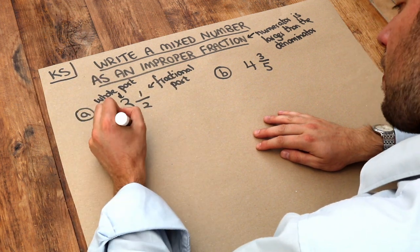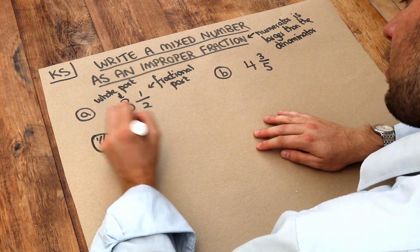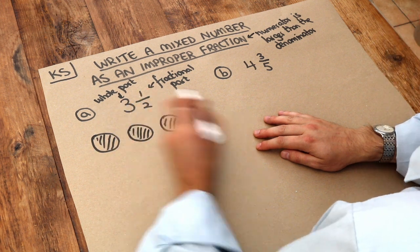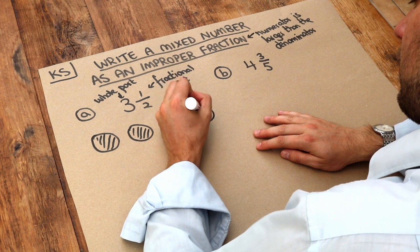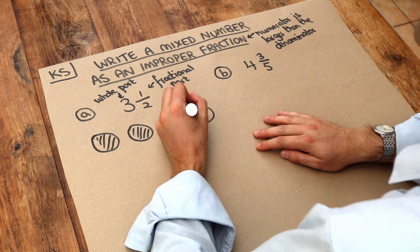So if I draw three and a half pizzas, that's one whole pizza, two whole pizzas, three whole pizzas and an extra half a pizza. So if I split that in half, I just want that half a pizza.